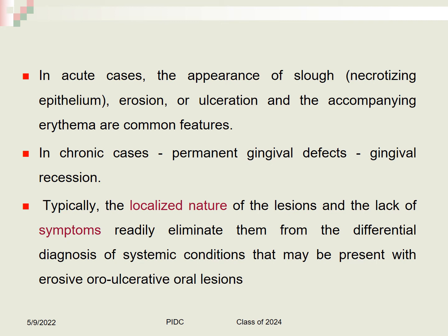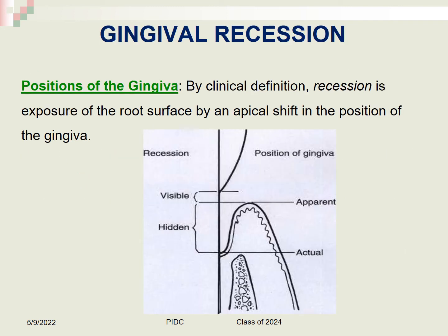In acute traumatic cases, slow erosion, ulceration, and accompanying erythema are common. In chronic cases, gingival defects result in gingival recession. Gingival recession is defined as the exposure of the root surface by an apical shift in the position of the gingival margin. Two positions are considered: the apparent position (where the gingival margin is) and the actual position (where the junctional epithelium is), and the actual position must be taken into account for accurate disease assessment.